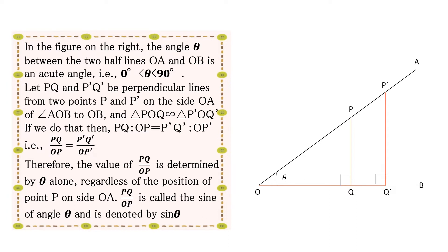Let PQ and P'Q' be perpendicular lines from two points P and P' on the side OA of angle AOB to OB, and triangle POQ be similar to triangle P'OQ'. If we do that, then PQ over OP equals P'Q' over OP'.